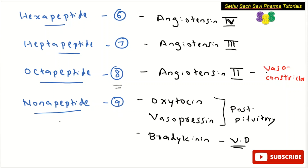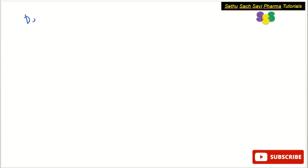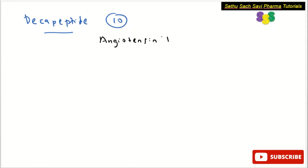So oxytocin, vasopressin, and bradykinin are examples of nonapeptides. Coming to decapeptide — made up of ten amino acids — the important examples are angiotensin 1 and gonadotropin releasing hormone (GnRH). GnRH and angiotensin 1 each contain ten amino acids and belong to the decapeptide category.